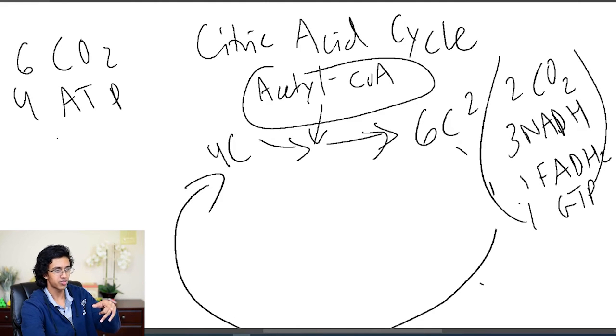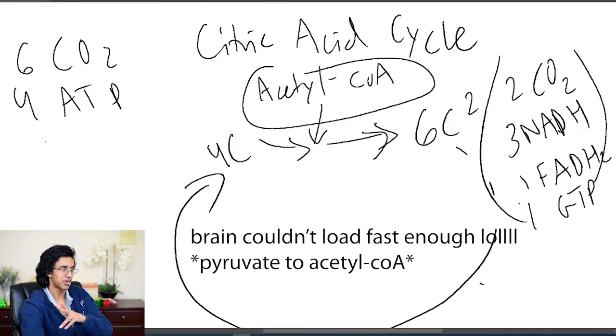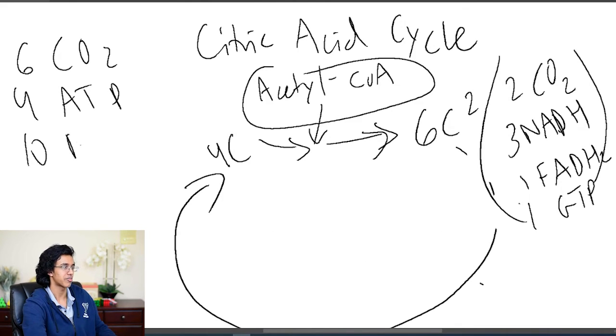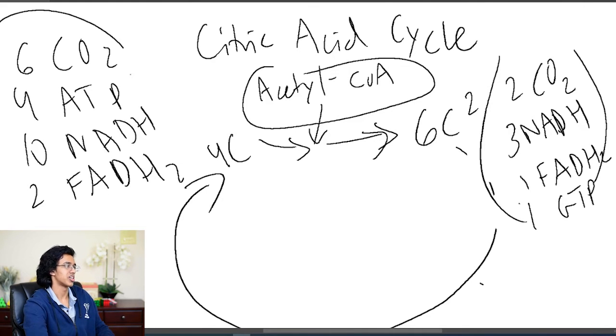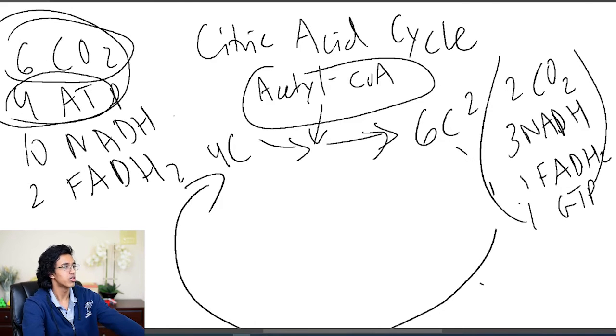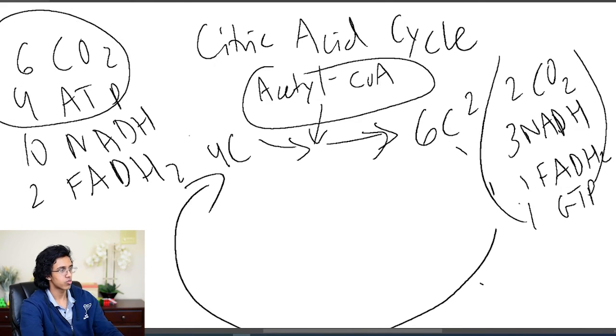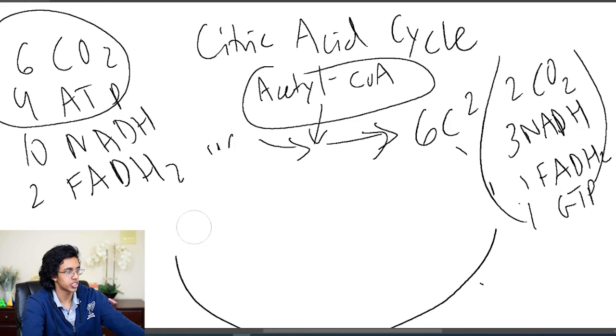But then we have a ton of NADHs and FADH2. We got six NADHs from here. We got two from glycolysis. That's eight. Then we got like two from converting acetyl to whatever. So now we got ten NADHs just hanging around. And then for FADH2 we got two of these boys. So these guys are taken care of. We wanted to end up with ATP and we wanted to end up with CO2. But what are these noobs doing? Well that's where the electron transport chain comes in.